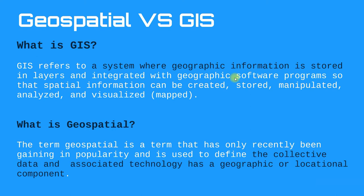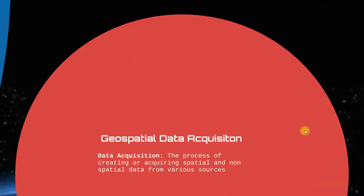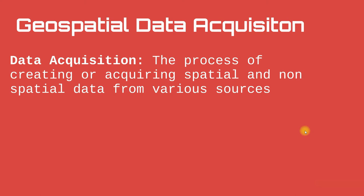GIS spatial is a term that has only recently been gaining in popularity, used to define the collective data and associated technology that has a geographic or location component. So GIS is a system where geographic information is stored, while GIS spatial refers to the collection of data associated with geography.